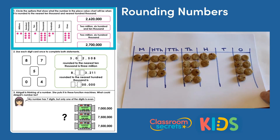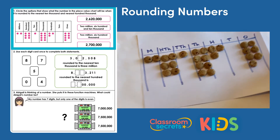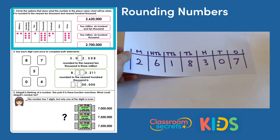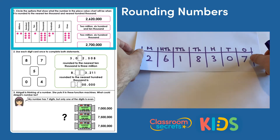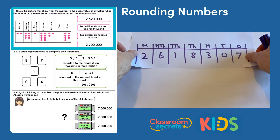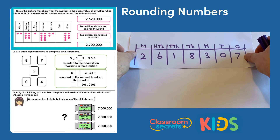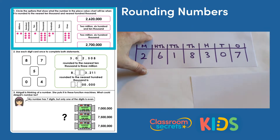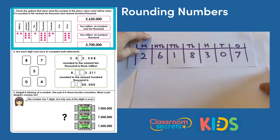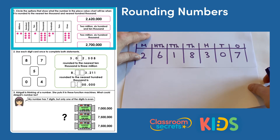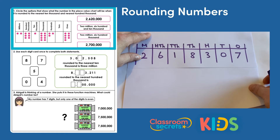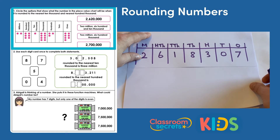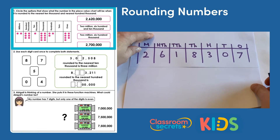If I write this number out using digits in a place value chart, we've got two million, six hundred and eighteen thousand, three hundred and seven. What we're going to do then is look at what that number will be when we round it to the nearest ten thousand and nearest hundred thousand, and then see which of the options in the question it matches up with.